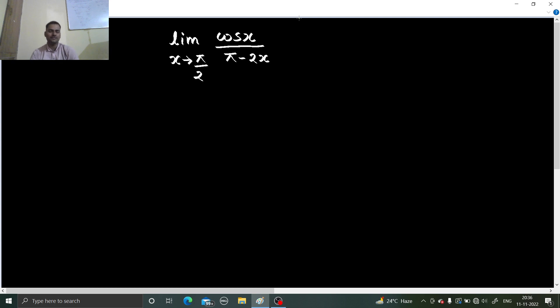I have already discussed a problem dealing with this type of limits and what we do in this type of case is generally we take something will be there in the problem which you can substitute as other variable. So let us take pi minus 2x as h.